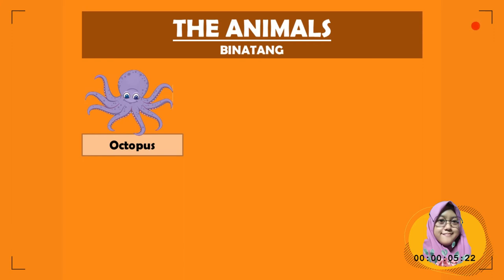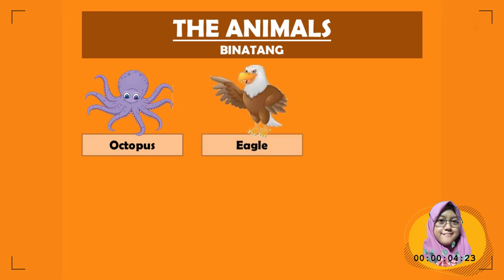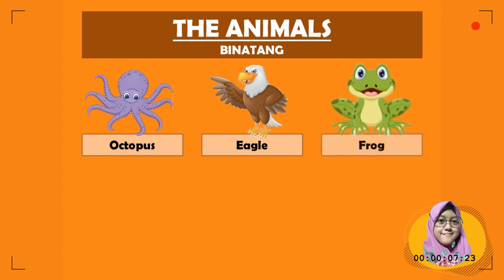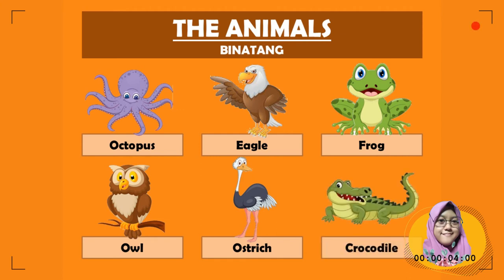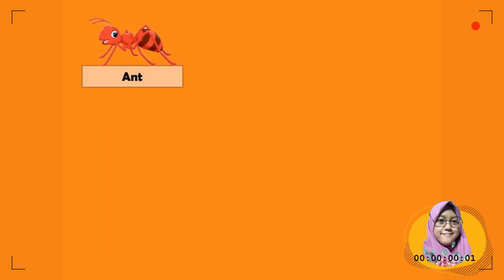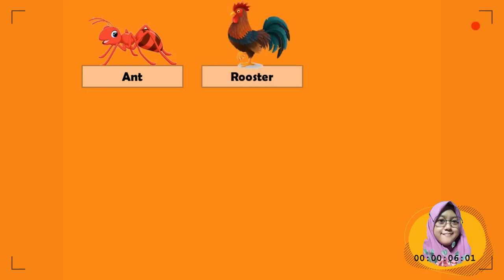Let's start singing together. Octopus - kurita, octopus - kurita. Eagle - elang, eagle - elang. Frog - katak, frog - katak. Owl - burung hantu, owl - burung hantu. Ostrich - burung unta, ostrich - burung unta. Crocodile - buaya, crocodile - buaya. Ant - semut, ant - semut. Rooster - ayam jantan, rooster - ayam jantan.